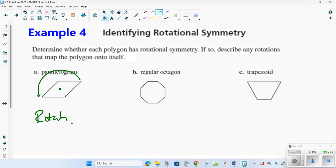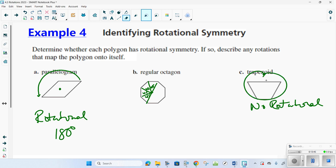The next one has multiple rotations. Determine whether each polygon has rotational symmetry. If so, describe any rotations that map the polygon onto itself. Every time it moves to the next point, it would rotate. Here's 180 going straight across. If I divide this up, every 45 degrees, this picture has rotational symmetry. The last one has no rotational symmetry. You would have to go 360 degrees all the way around to get back to its original picture. So this one has rotational symmetry every 45 degrees.